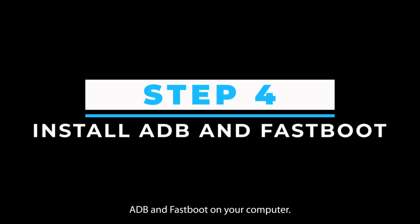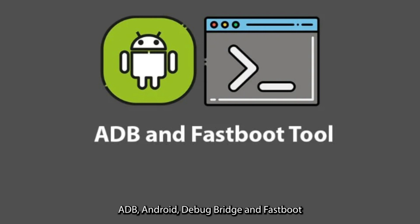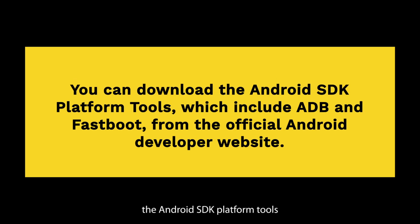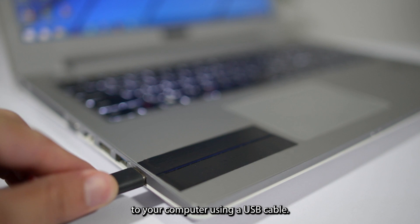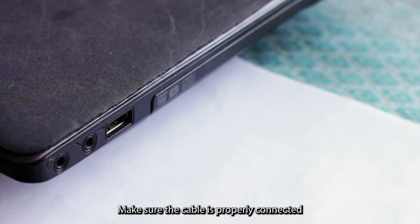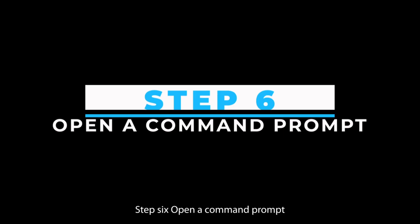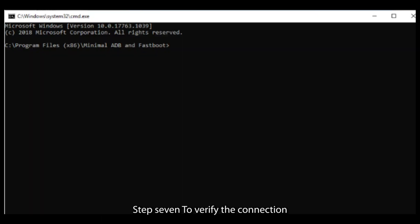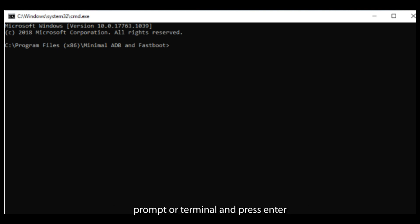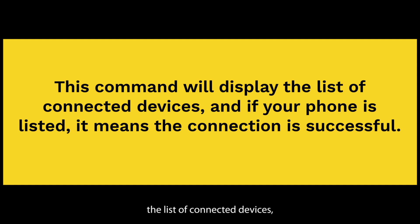Step 4: Install ADB and Fastboot on your computer. ADB (Android Debug Bridge) and Fastboot are essential tools for communicating with Android devices. You can download the Android SDK Platform Tools, which include ADB and Fastboot, from the official Android developer website. Step 5: Connect your OnePlus phone to your computer using a USB cable, making sure the cable is properly connected and the phone is recognized. Step 6: Open a Command Prompt (Windows) or Terminal (macOS or Linux). Step 7: To verify the connection, type the command 'adb devices' and press Enter — this will display the list of connected devices, and if your phone is listed, the connection is successful.